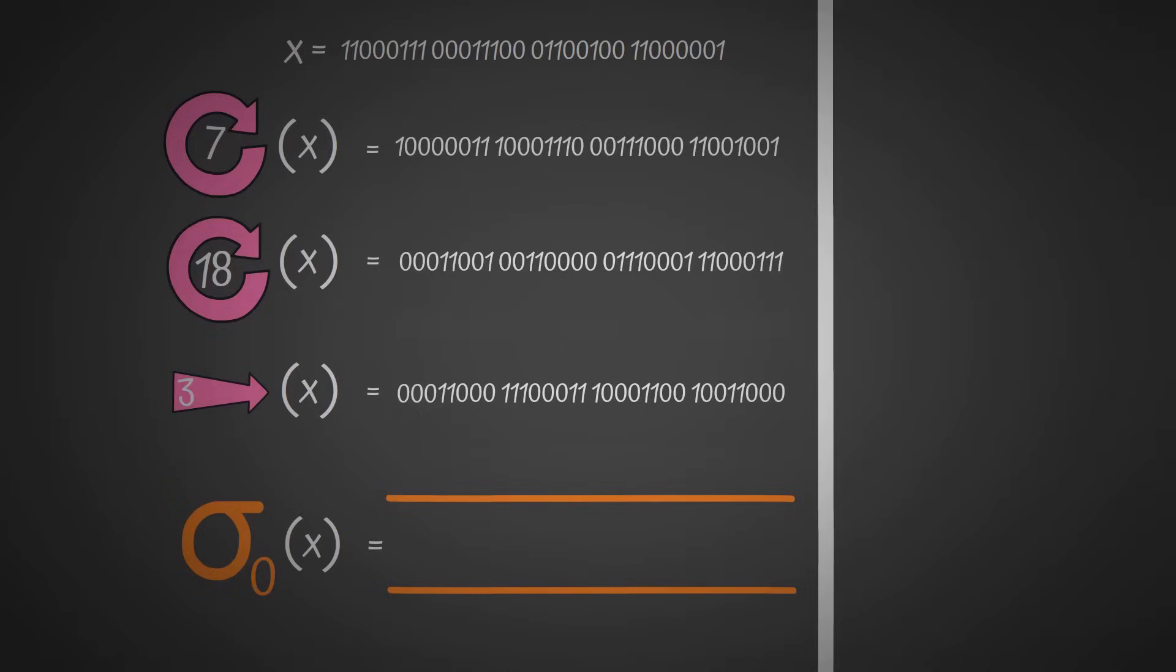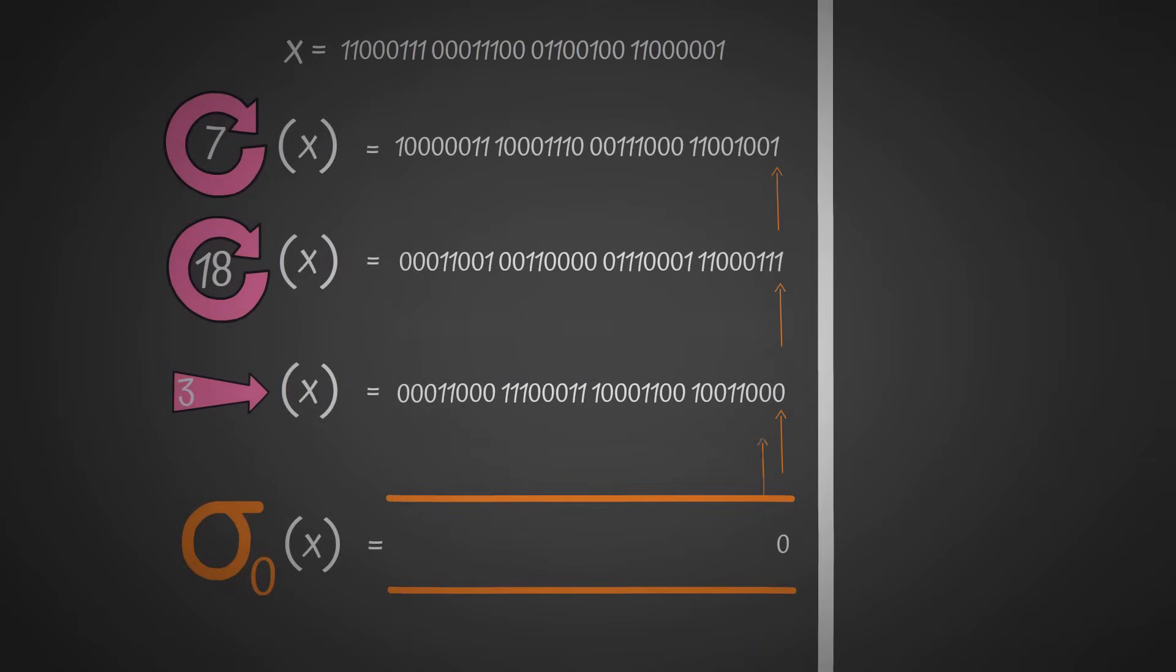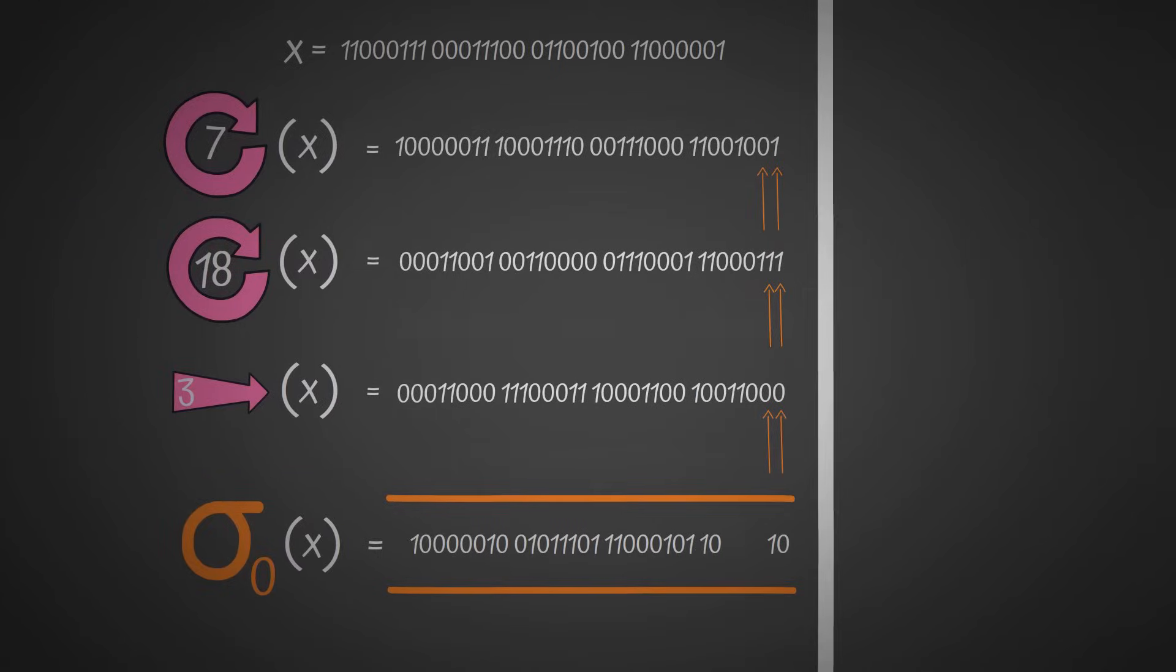The output of sigma 0 of X is given as this. We have these three numbers, and we do bitwise addition modulo 2. To get the rightmost bit, we do 1 plus 1 plus 0, which is 2, which is 0 mod 2. The second is 0 plus 1 plus 0, which is 1, which is 1 mod 2. We do the same over and over again, and we end up with this number.